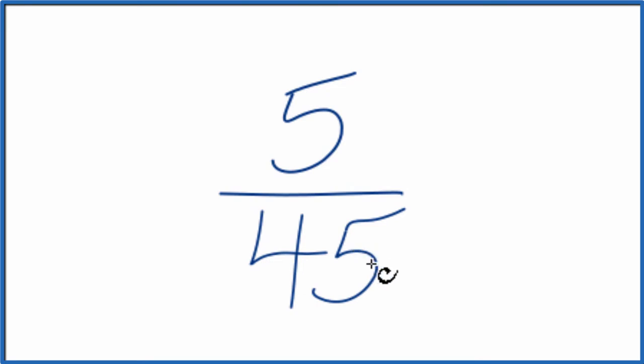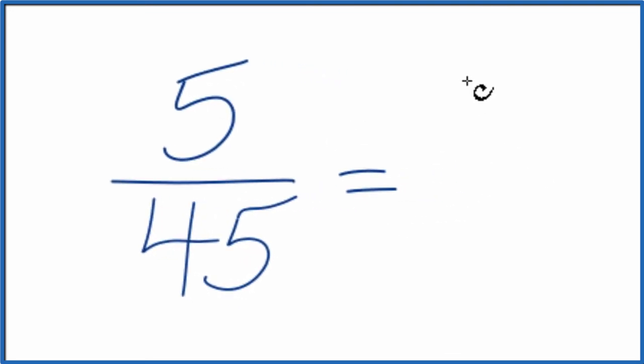5 actually goes into 45 nine times. 5 times 9, that's 45. So we could just say 5 divided by 5, that's 1, and then 45 divided by 5, that's 9.